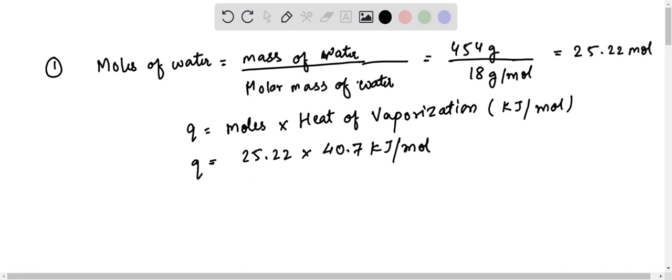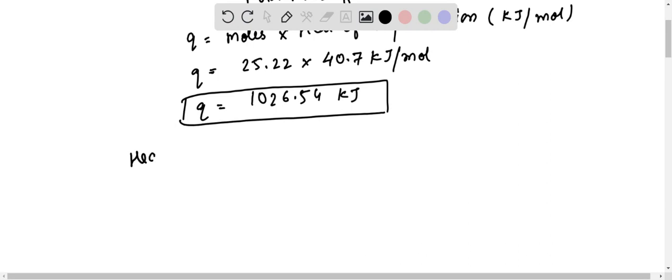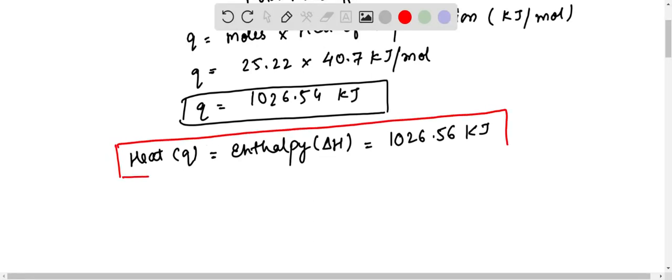This will be given by Q equals to 25.22 into 40.7 kilojoule per mole. 40.7 kilojoule per mole is given in the problem, that is heat of vaporization. This will give us final answer as 1026.54 kilojoule. This is heat. And here heat Q equals to enthalpy, that is delta H. This equals to 1026.56 kilojoule. So this is answer for our first step.